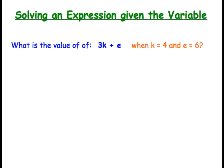Next, we are going to solve expressions when given a variable. Now notice this is an expression here because it does not have an equal sign and not equal sign, a greater than or less than sign. So the question asks us, what is the value of 3K plus E when K equals 4 and E equals 6? So we're given the value of each one of these variables. We know that K is 4 and E is 6. So we simply just have to substitute them into our expression here.